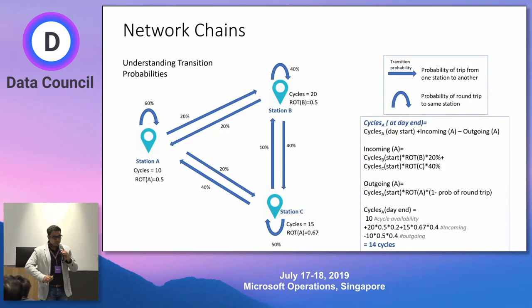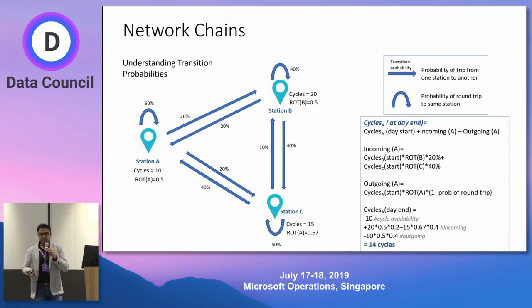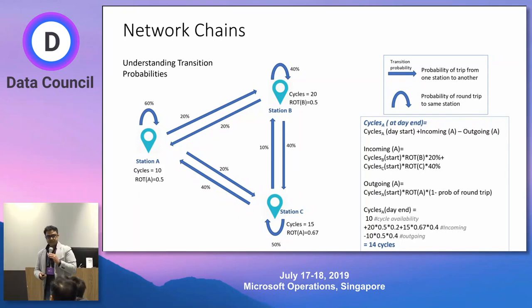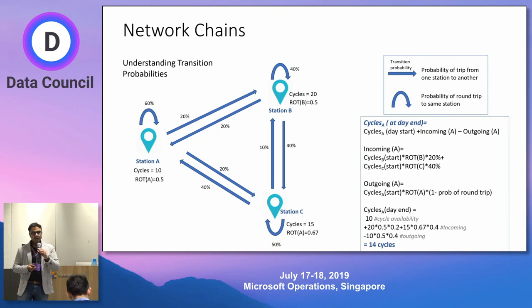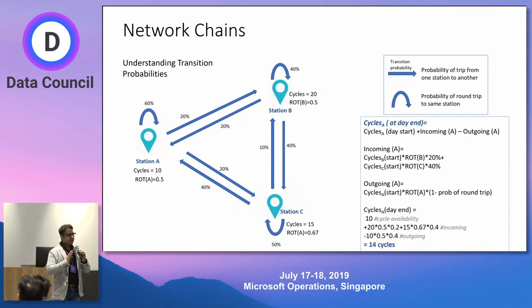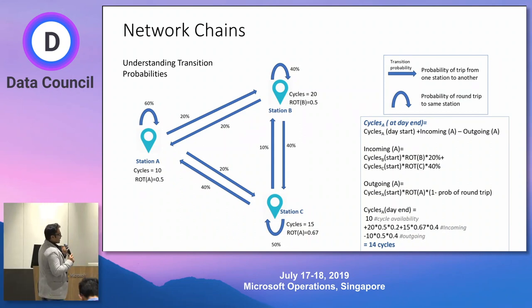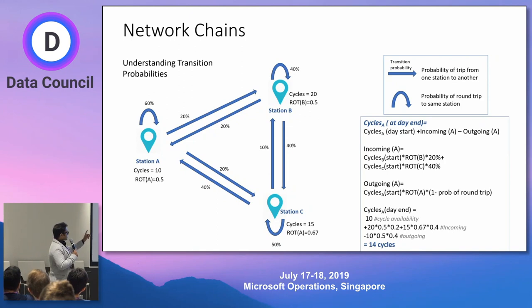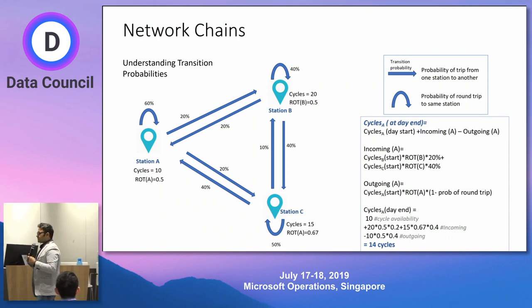To maximize overall trips we predict the rate of trips and the number of cycles needed. But a business has constraints — I cannot have infinite supply. To put the constraints, I'll introduce another concept that works on transition probability. Using past data, we can figure out the probability of a bicycle going from station A to station B. Imagine we have only three stations: A, B, and C. With 10 cycles at station A, from past data: 20% of the time a bicycle goes from A to B, 20% from A to C, and 60% of the time it is a round trip back to the same station.